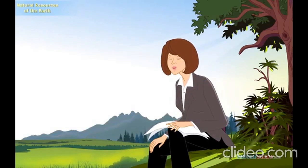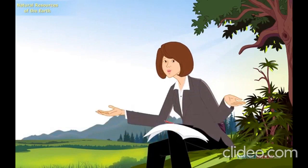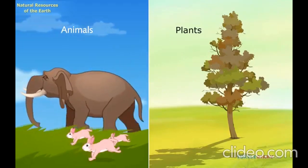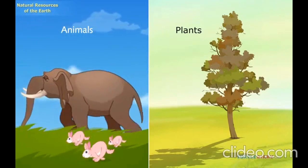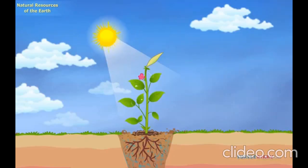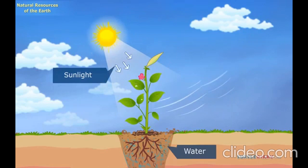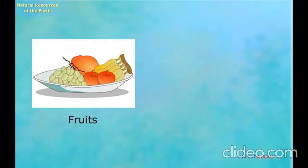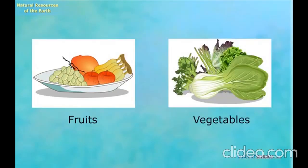How do we use these natural resources? All plants and animals use oxygen from air to breathe. Plants use sunlight, water from soil, and carbon dioxide from air to make their own food. We eat these plants, their fruits, and vegetables.